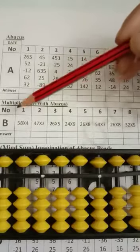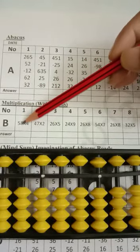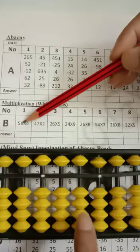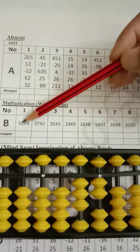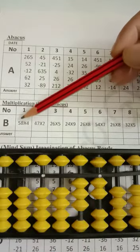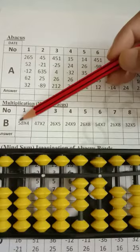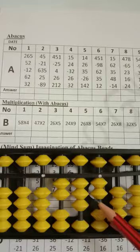Column B question number 1: 58 multiply by 4. 4 times 8 is 32. 30 and 2. 30 is 10s place, 2 is 1s place. Now we use 10s and 100s places. 5 times 4 is 20. Then your final answer will be 232.